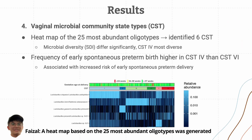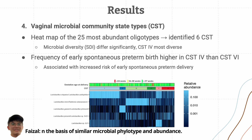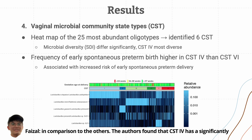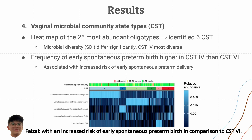A heat map based on the 25 most abundant oligotypes was generated and based on this, 6 community state types (CSTs) were identified through clustering on the basis of similar microbial phylotype and abundance. The SDI for the CSTs differed significantly, with CST4 being significantly more diverse in comparison to the others. The authors found that CST4 has a significantly higher frequency than CST6 for early spontaneous preterm birth, associating CST4 with an increased risk of early spontaneous preterm birth in comparison to CST6.